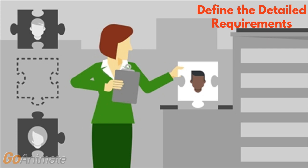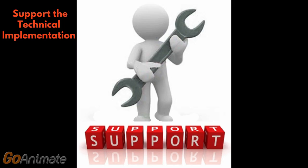Step five: define the detailed requirements. Detailed requirements provide your implementation team with the information they need to implement the solution. They make scope implementable. Without clear, concise, and actionable detailed requirements, implementation teams often flounder and fail to connect the dots in such a way that delivers on the original business case for the project.